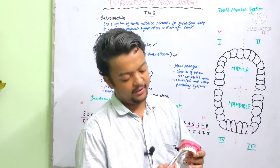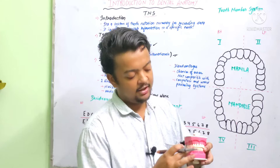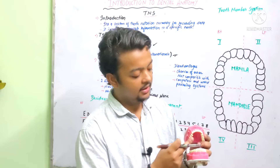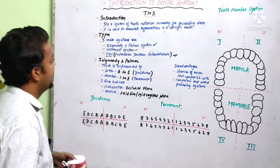For the canines, we have mesial, distal, labial, and palatal. In the closed position, we can also say mesial, distal, labial, and lingual. For molars, it becomes mesial, distal, buccal, and palatal. One more surface is the occlusal in the molar area and the incisal in the anterior teeth. So that is all about the surfaces of the tooth. Now let's jump back to our main discussion — the tooth number system.